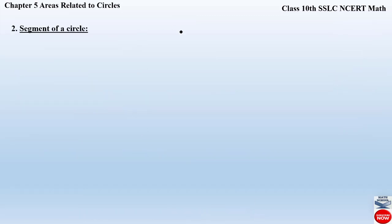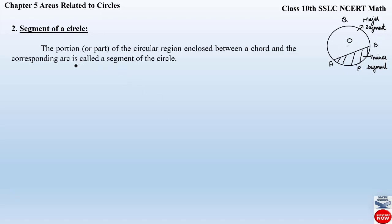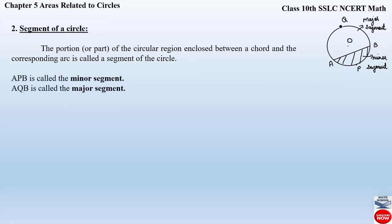Now let us see the segment of a circle. Consider a circle with center O. Let us draw a chord and name it AB, and the arc enclosed by this chord will be P. The portion or part of the circular region enclosed by a chord and a corresponding arc forms the segment of the circle. This segment is enclosed by chord AB and arc AP. Here AB forms the minor segment, and if we name the other arc as Q, then AQB forms the major segment. The definition states: the portion or part of the circular region enclosed between a chord and the corresponding arc is called the segment of a circle. Here APB is the minor segment and AQB forms the major segment.